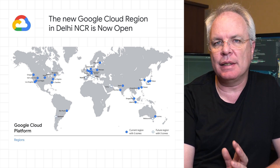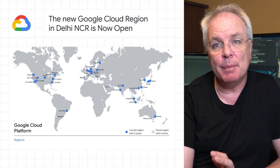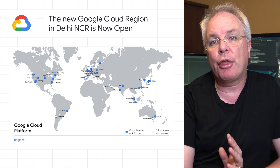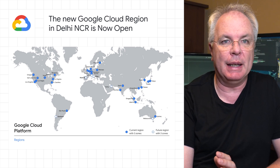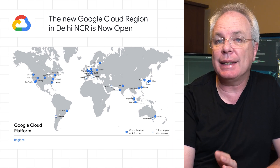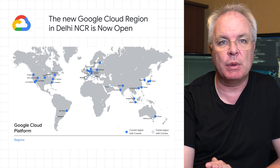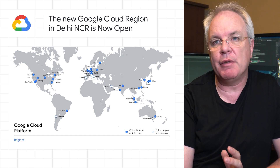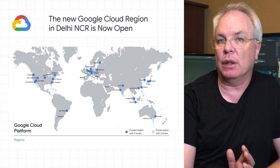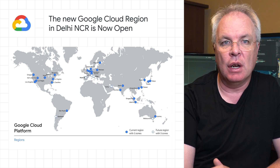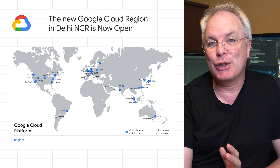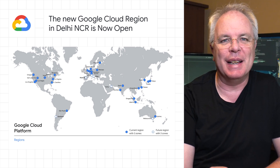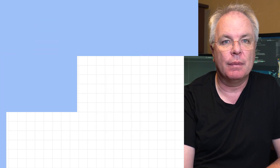Its design will help both Indian and global companies alike build highly available applications for their customers. The region will open with three availability zones to protect against service disruptions. You can learn more by visiting the Google Cloud Locations page, where you can also watch the region launch event. The links are in the description below.